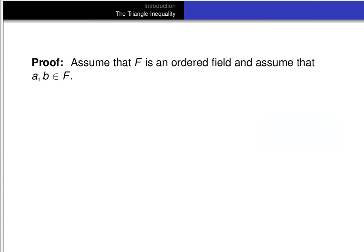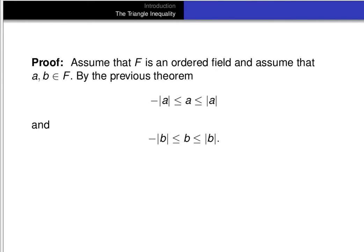To prove that, let's assume that f is an ordered field and that a and b are elements of f. By the second part of the theorem, we know that a is bounded between its negative and positive absolute value, and b is bounded between its negative and positive absolute value.